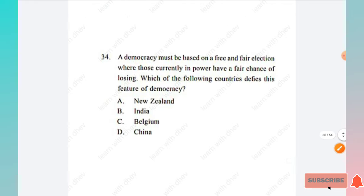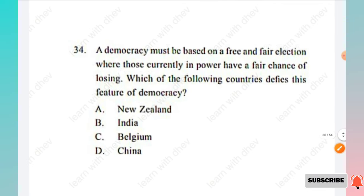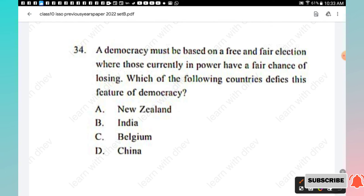Question 34: A democracy must be based on free and fair elections where those currently in power have a fair chance of losing. Which of the following countries defies this feature of democracy? Options: New Zealand, India, Belgium, China. The answer is Option D, China.